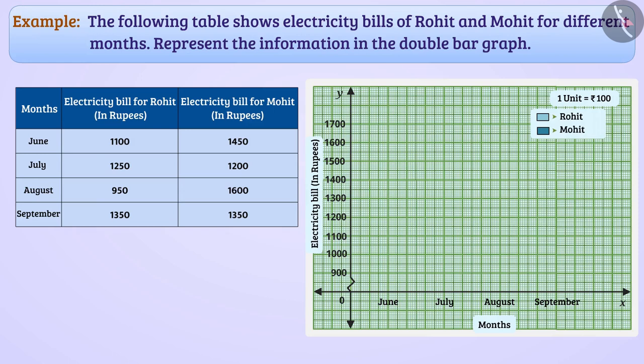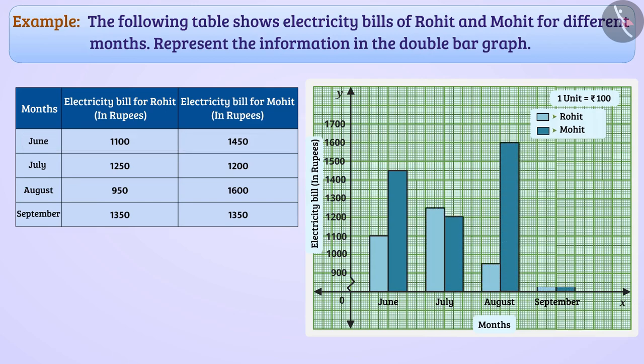Now, we will show the bills of Rohit and Mohit in the month of June by drawing the double bar. Similarly, we will draw a double bar graph for all months.